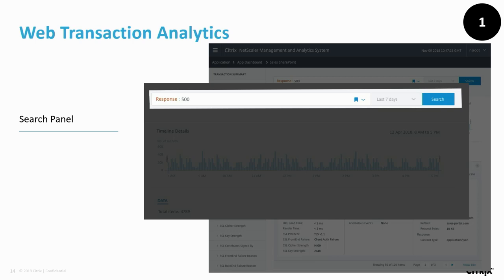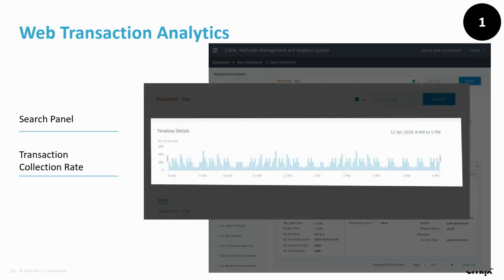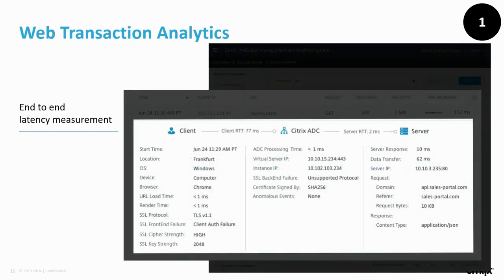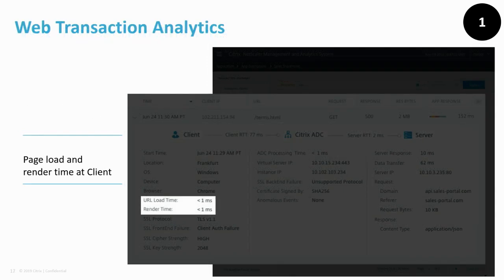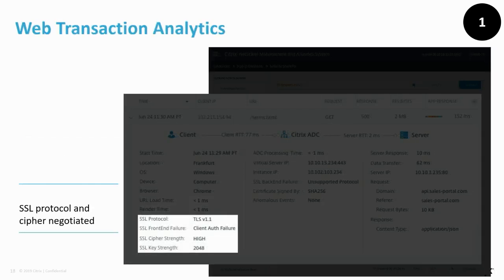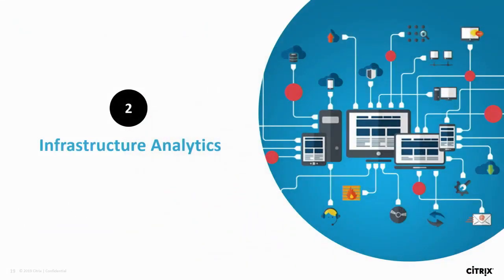You can see the search panel with all transaction collection rate all in one. The end-to-end latency measurement shows everything on one screen: from client to Citrix ADC to server with all measurements. If you want to see page load and rendering, you can see it — or SSL — with all the details you need, and you can easily see what failed and why.